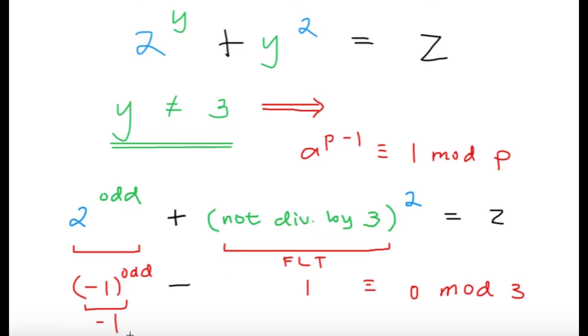Now, since negative 1 raised to an odd number gives you negative 1, plus 1 by FLT, negative 1 plus 1 is 0 modulo 3. So this will give that z is divisible by 3. But if z is prime, then z must be 3. So if y is not equal to 3, z should equal to 3.